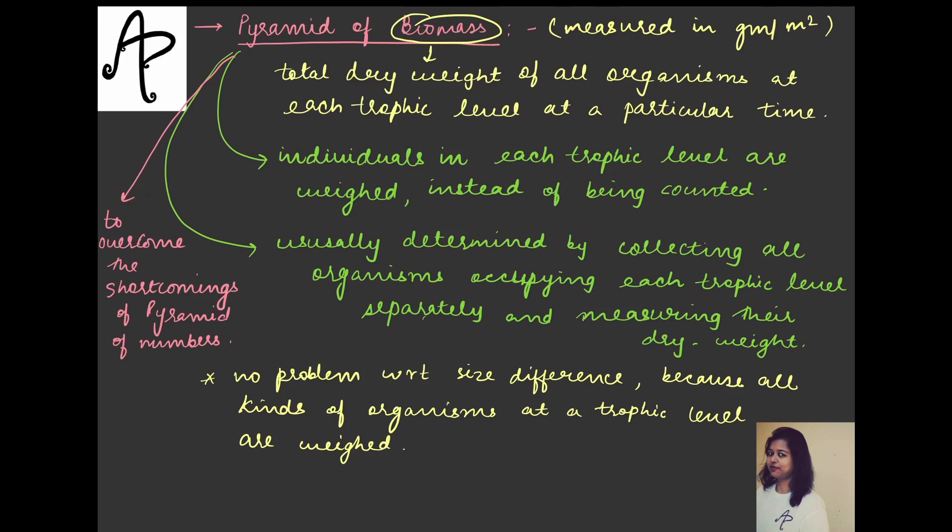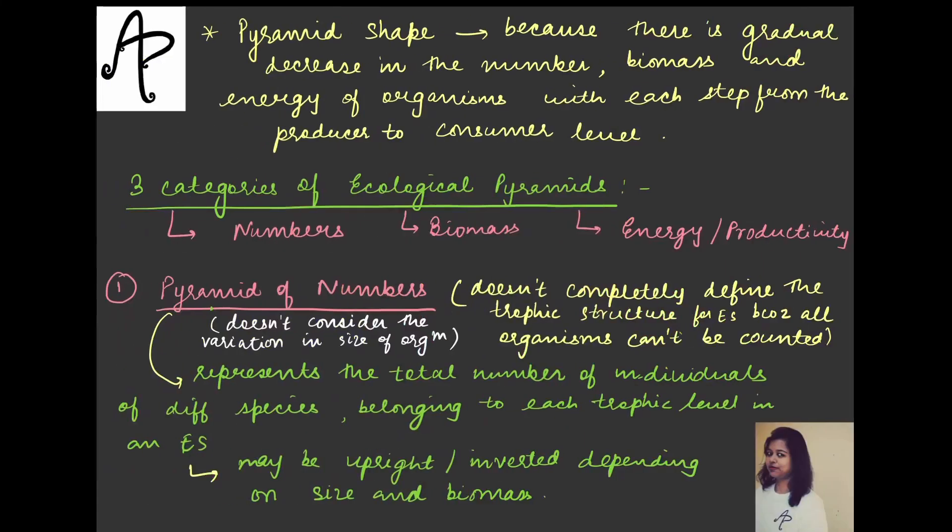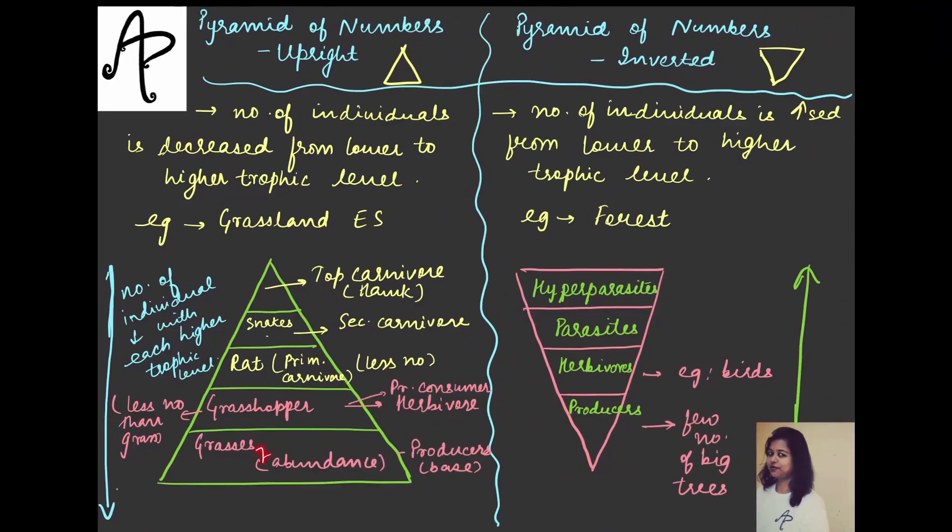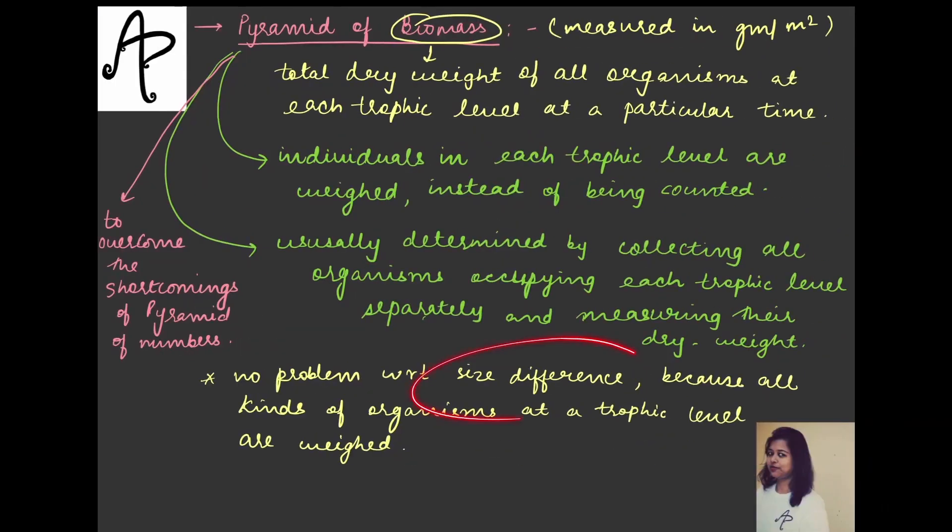Now when we talk about the shortcomings, we also need to notice that there is no problem with respect to the size difference. In the pyramid of numbers, we have seen that size becomes an issue. It does not consider the variation in the size of the organism. So any organism of any size can be present in any of the trophic level because here the whole idea is to count the numbers. Size doesn't matter. But in this case, size difference will not even matter because they will combine all the organisms and they will just check their dry weight. So here it is all about the weight. Here it is not at all about the size because it is not about counting also. So here that problem which was lying in the pyramid of numbers is overcome already.